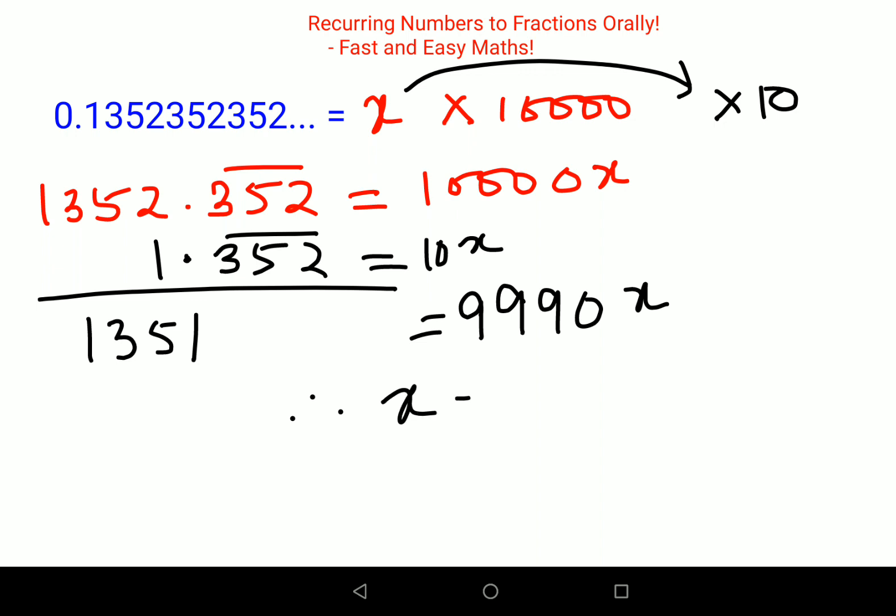Therefore, your x equals 1351 upon 9,990. So now you understood why your basics are important, because not every time your trick might work.